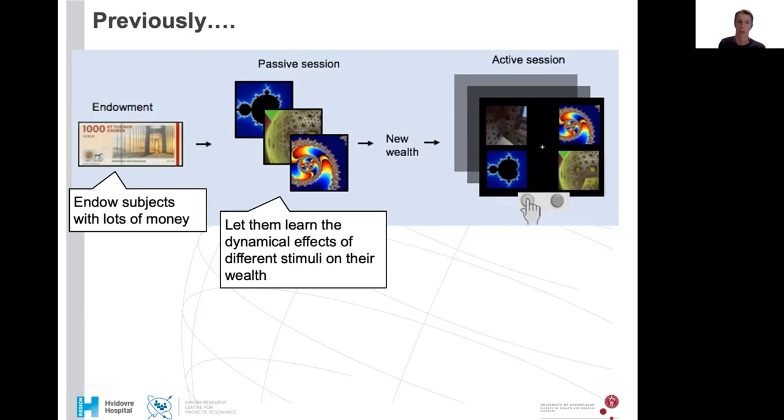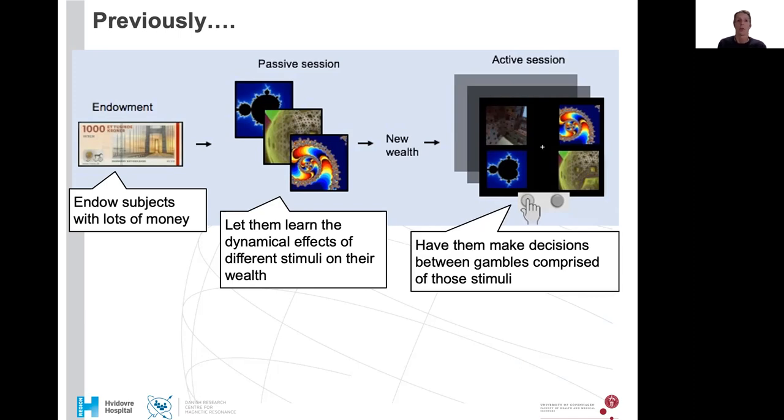And then they would go on to the active session where they had to make decisions between gambles that were comprised of those stimuli. So it was, do you prefer the gamble on the left or on the right side? And each of them would be a 50-50 coin toss like gamble. Would you prefer the 50% chance of the one in the top or the one in the bottom being realized? And would you then prefer the 50-50 chance between the two on the left or the two on the right?